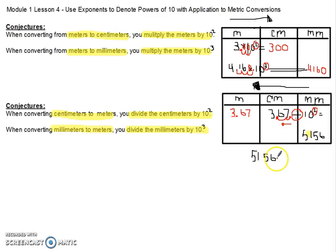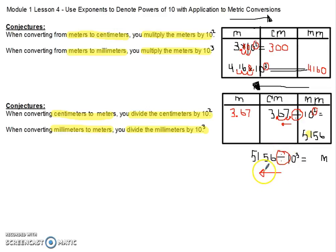5,156 millimeters divided by 10 to the third power, which is also equal to 1,000. When I am dividing, my decimal is going to move to the left, and it moves 3 place values from the exponent. My decimal starts at the end of the number, and I move it 1, 2, 3 place values. So 5,156 millimeters equals 5.156 meters.